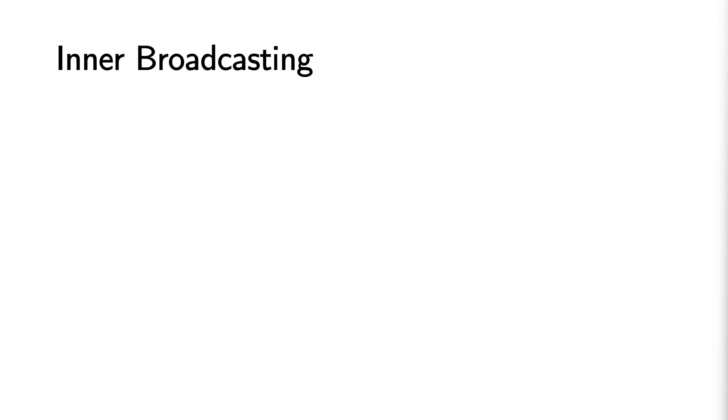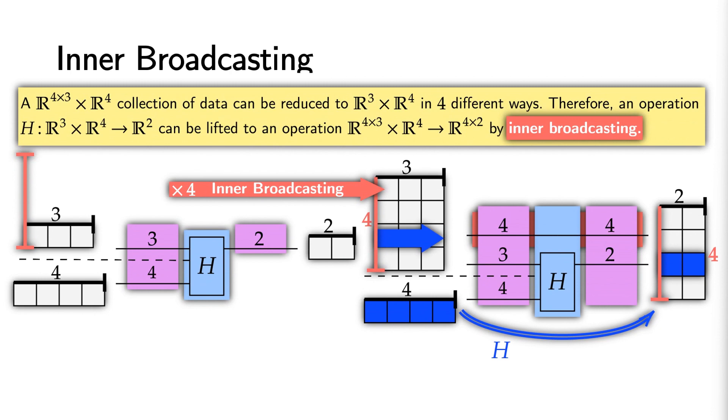We can also broadcast within tuple segments when an operation has a tuple input. This action, inner broadcasting, is also naturally shown with neural circuit diagrams by placing an adjacent tensor wire. This adjusts the input and output variable shapes in the appropriate manner.